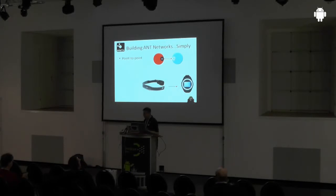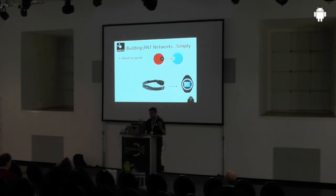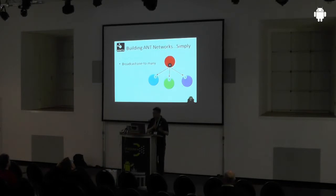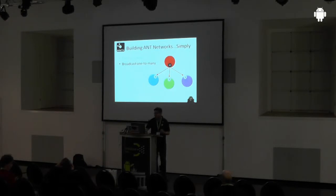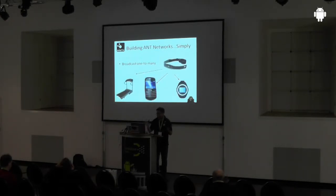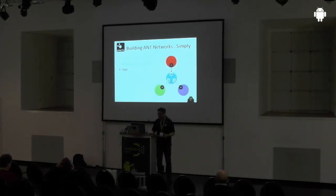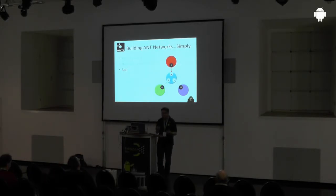So what can you do with ANT Plus? Typically you can do single point-to-point communication — for example, a heart rate sensor to a watch. That same channel, though, which is open broadcasting, can be received by many devices — one-to-many — meaning any number of slave channels can receive from a single master channel. You can have any number of devices listening at the same time: fitness equipment, a watch, a cell phone, anything like that. Currently there are eight channels per device, and that can be expanded in the future.